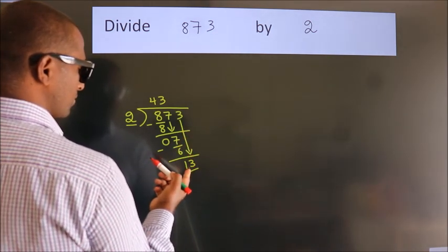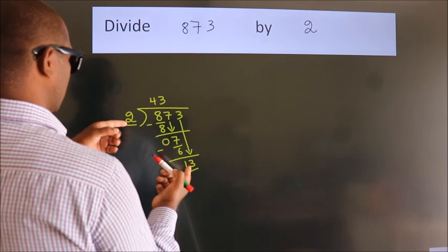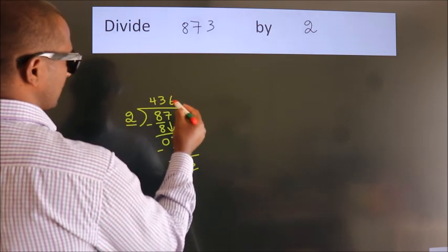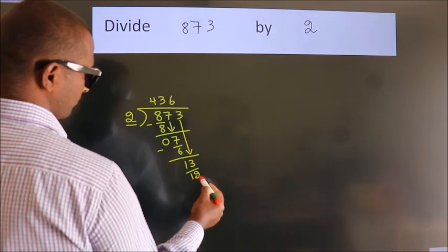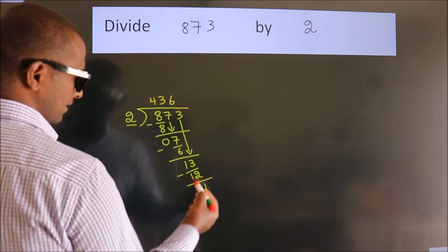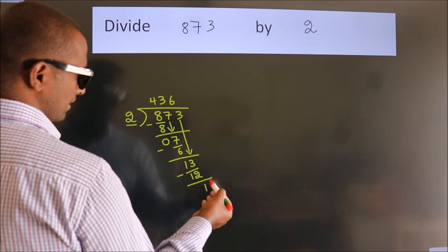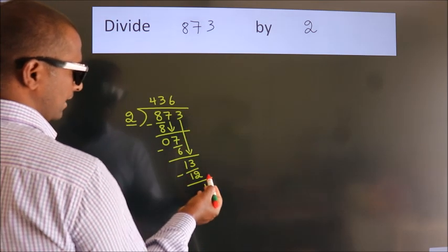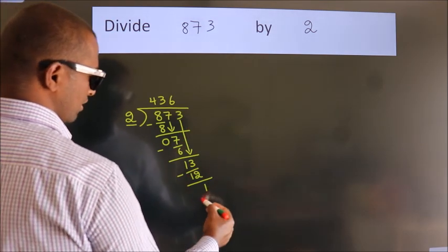A number close to 13 in 2 table is 2, 6, 12. Now we subtract, we get 1. After this, no more numbers to bring it down. So we stop here.